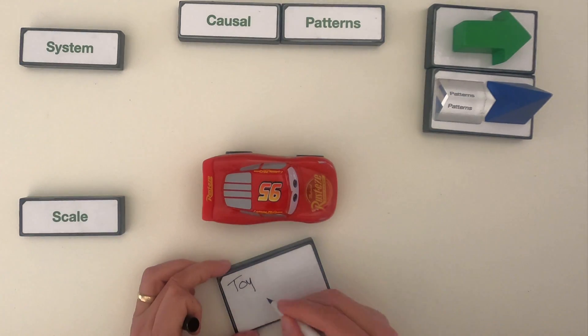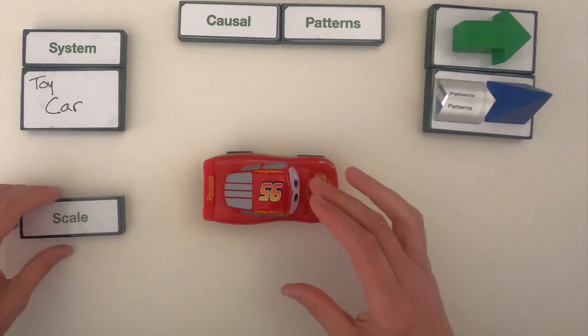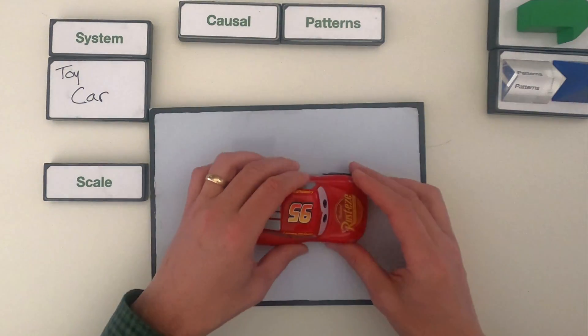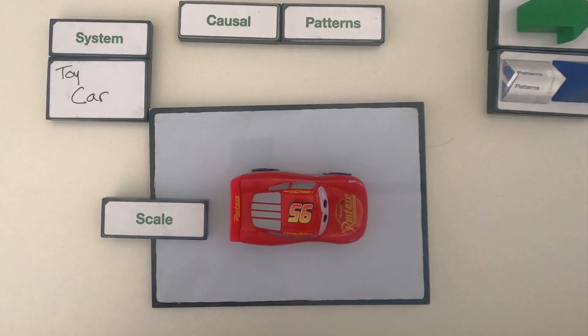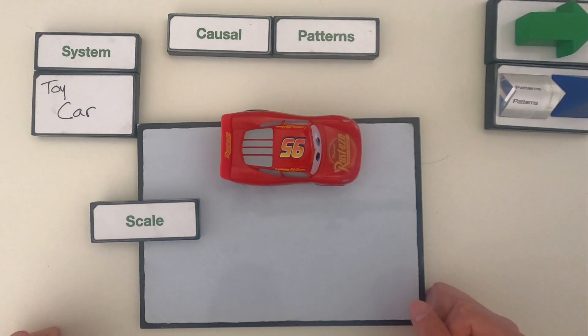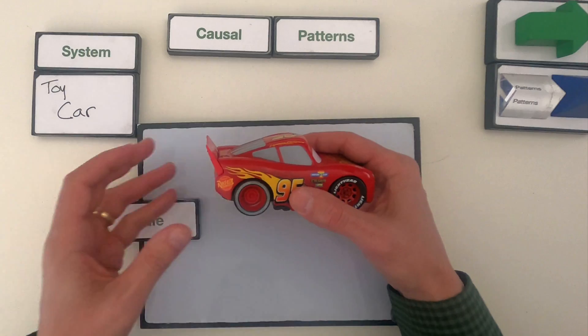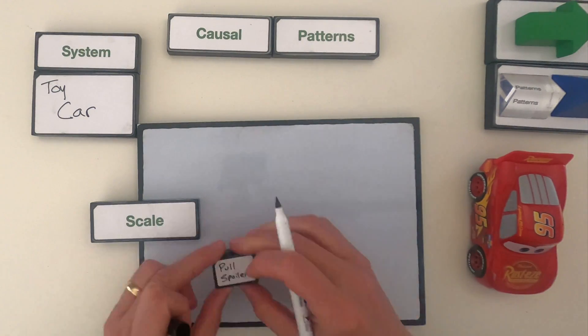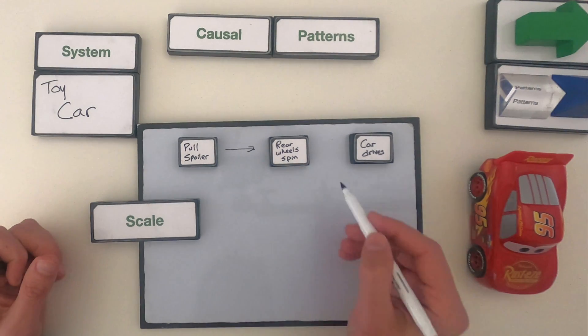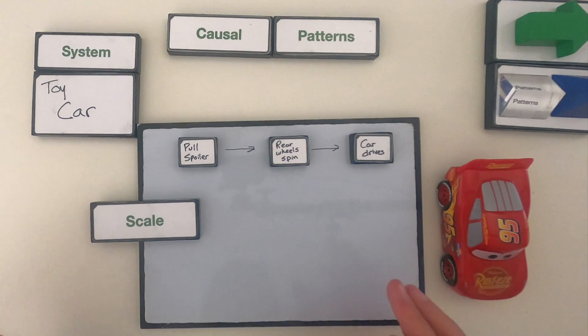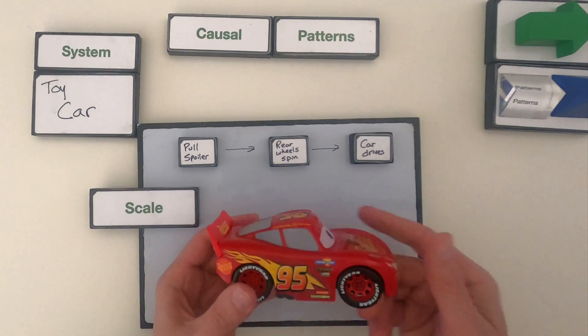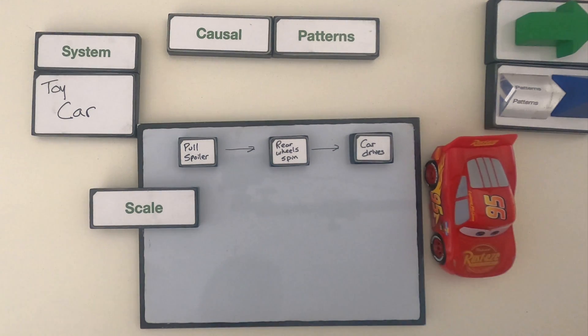So first of all, let me define the system. The system is going to be this toy car, and we're going to change the scale at which we understand this system. We're going to start by looking at the large scale and then we're going to drift towards more of a small scale. First of all, let me do things that are large scale patterns. The big things that take place is I pull down on the spoiler. That causes the rear wheels to spin which causes the car to drive. These are all things that I can see at a large scale. But what we're going to have to do to figure out exactly how this car works is we're going to have to take it apart.